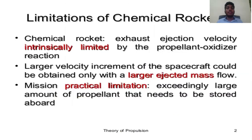Limitations of chemical rockets: Chemical rockets' exhaust ejection velocity is essentially limited by the propellant-oxidizer reaction. Larger velocity increments of the spacecraft could be obtained only when a larger ejected mass flows. Mission practical limitation: an exceedingly large amount of propellant needs to be stored aboard.